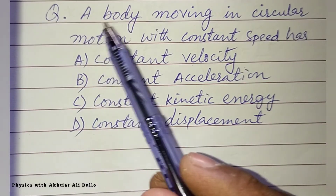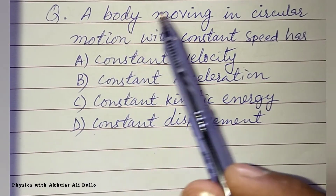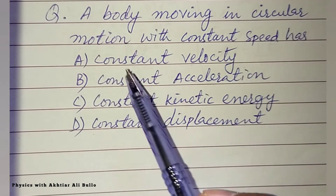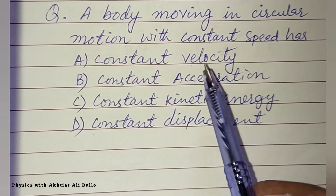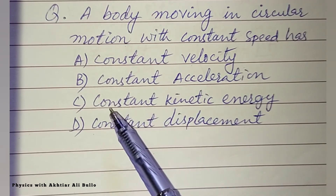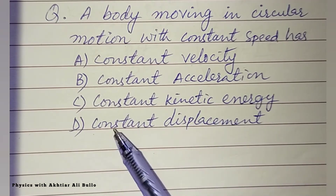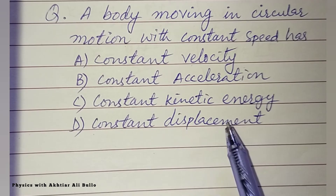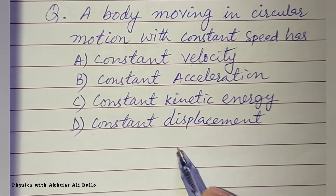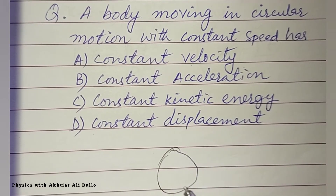The question is: a body moving in circular motion with constant speed has (a) constant velocity, (b) constant acceleration, (c) constant kinetic energy, or (d) constant displacement. As we know, when a body moves in circular motion with constant speed...